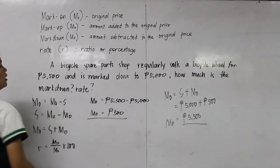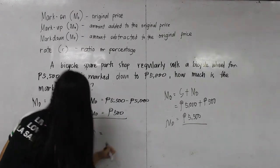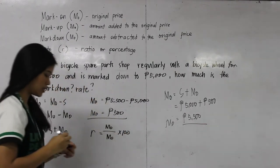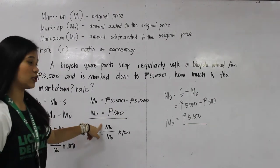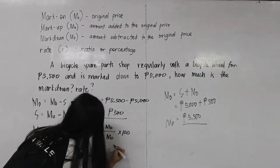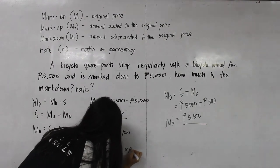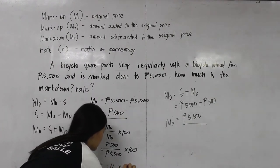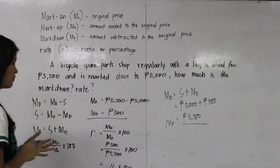Next, we are going to find the markdown rate. The formula for markdown rate is markdown divided by the original price times 100. This is the same formula as the markup rate — the numerator is your markdown amount, just as in markup the numerator is the markup amount. So our markdown is 500 divided by our original price of 5,500, giving us approximately 0.11 times 100, so our markdown rate is about 11%.